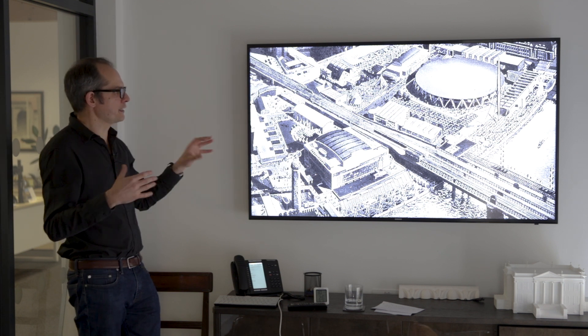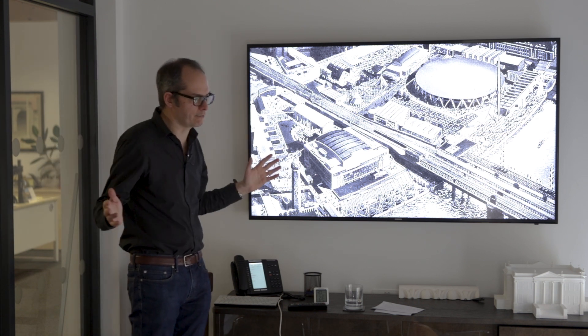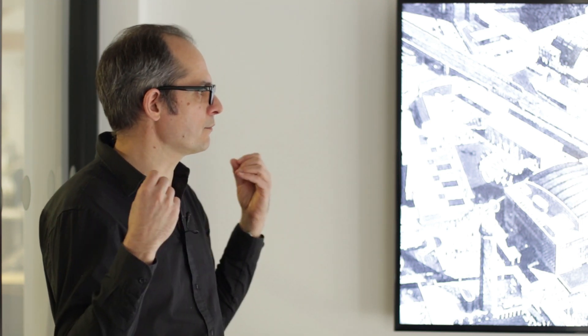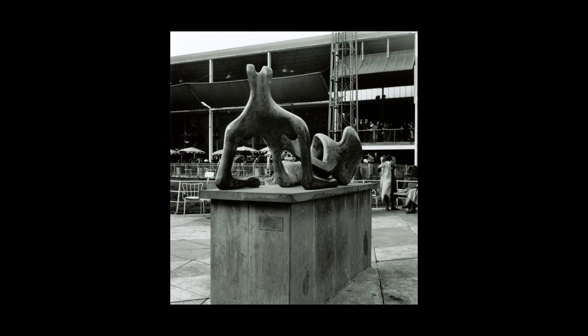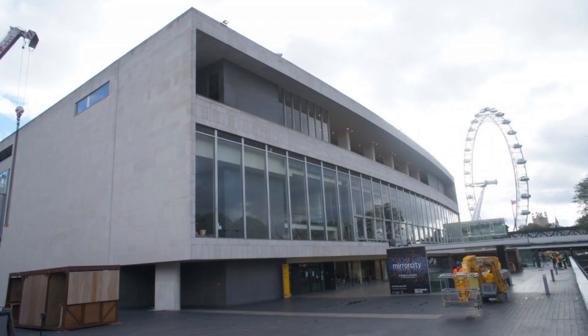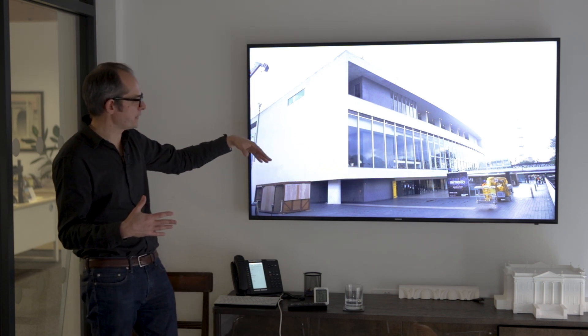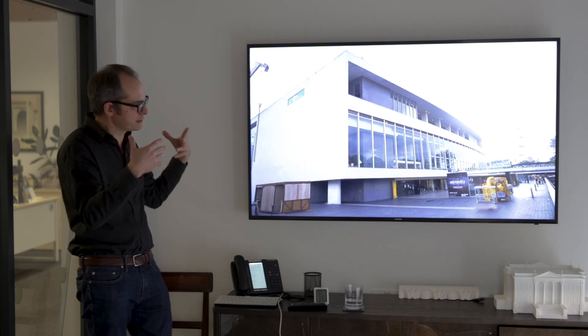Henry Moore came to prominence as a sculptor — no longer the beautiful First World War period figurative sculptures, but far more cubist and modernist work. The Festival Hall, part of the Festival of Britain site, is very modernist with very plain sides and no cornices. It has a little reference to Le Corbusier's Villa Savoie with columns below — a never-before-seen style.